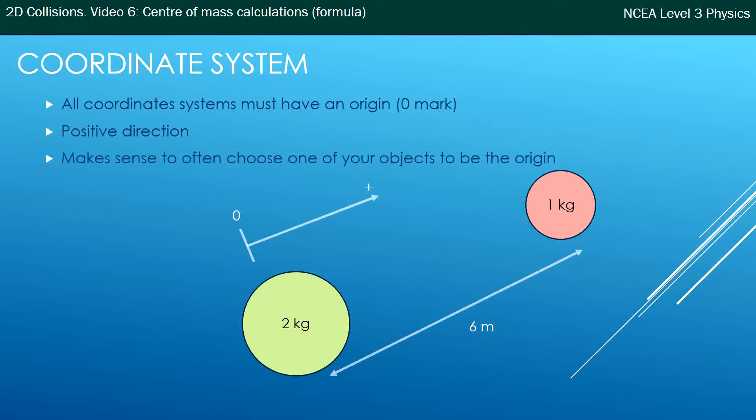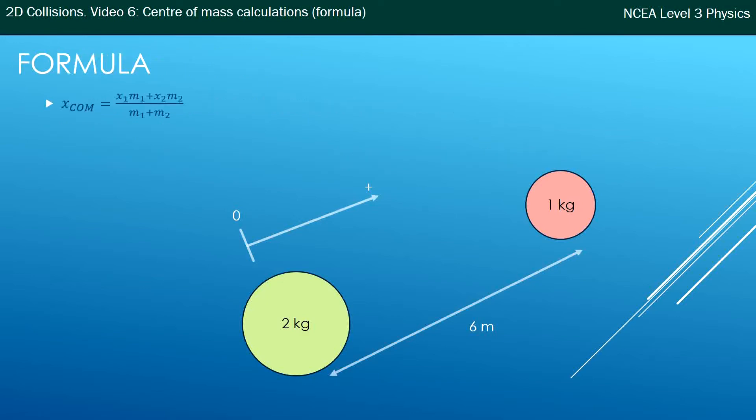It makes sense and I'll show you in the next slide it makes it a lot easier if you choose one of your objects to be the origin, but you don't need to. Okay so the formula you get given in your formula sheet: x_COM, center of mass, so that's position of the center of mass is given by x1, one of the objects times its mass, times x being position of the second object times its mass over the sum of the masses.